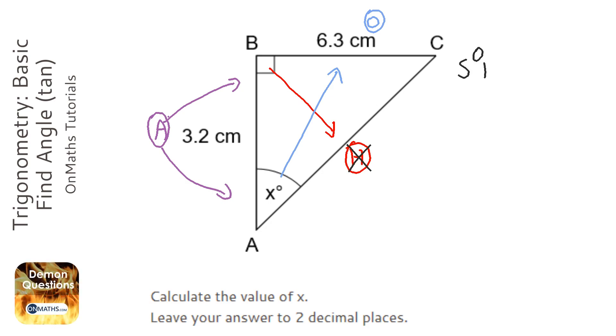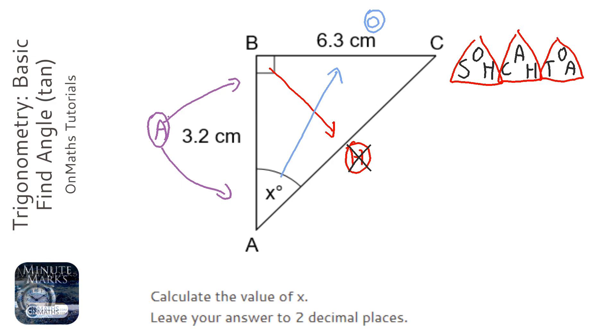Next step: write out your SOH CAH TOA. This is something you need to remember—it's a collection of three triangles. We'll cross out the one we're not using. Both SOH and CAH have an H in it, and we've already crossed that out, so we'll be using TOA.